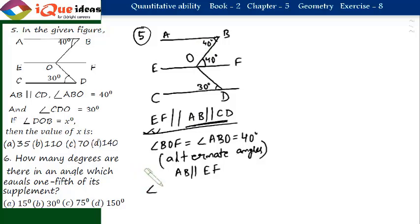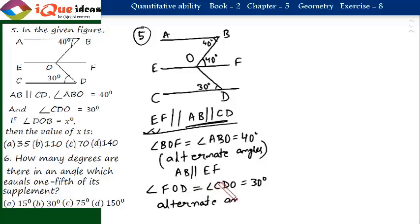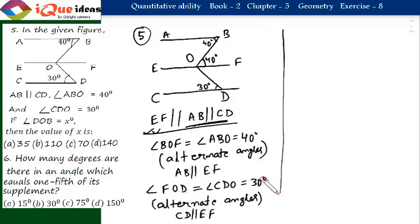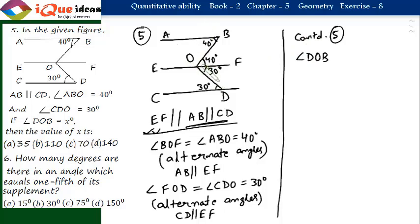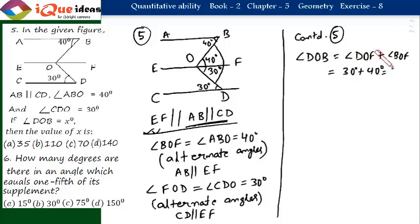By alternate angles, since CD is parallel to EF, angle FOD equals angle CDO, which is 30 degrees. The question asks for angle DOB, which equals angle DOF plus angle BOF — that is 30 degrees plus 40 degrees, which equals 70 degrees. So, the value of x is 70 degrees.